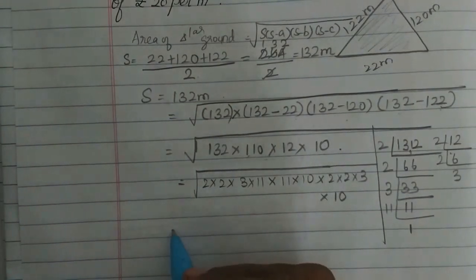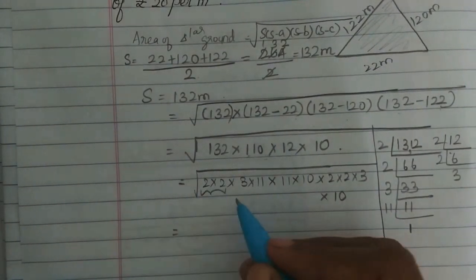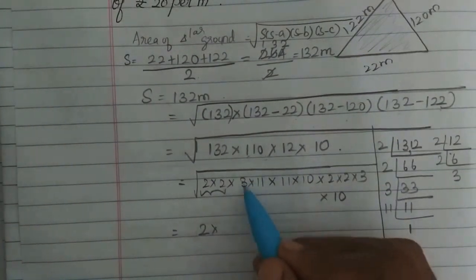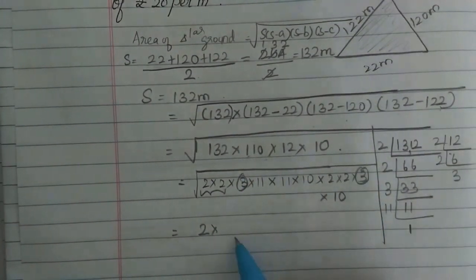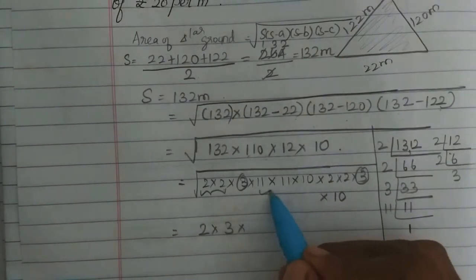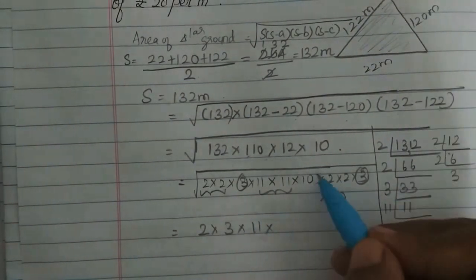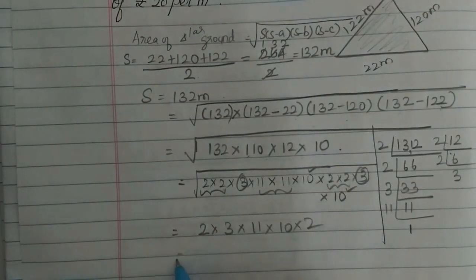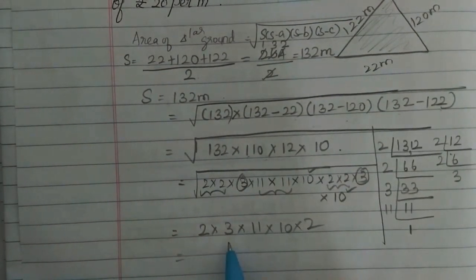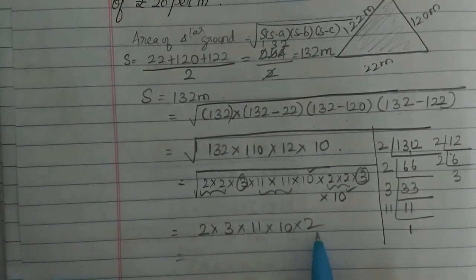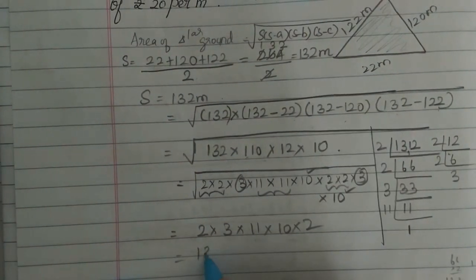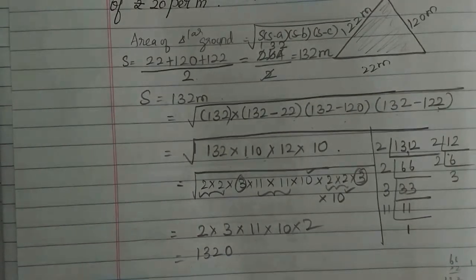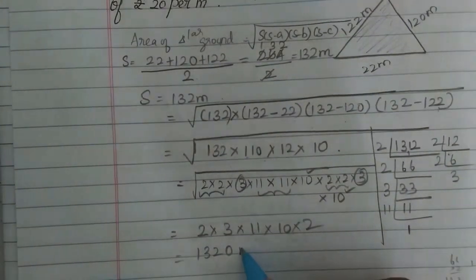Taking out pairs from under the root: from the two 2's we get 2, then we have 3, then 11, then from two 10's we get 10, and from two 2's we get 2. So 2×3 = 6, 6×11 = 66, 66×2 = 132, and 132×10 = 1320 meter square.